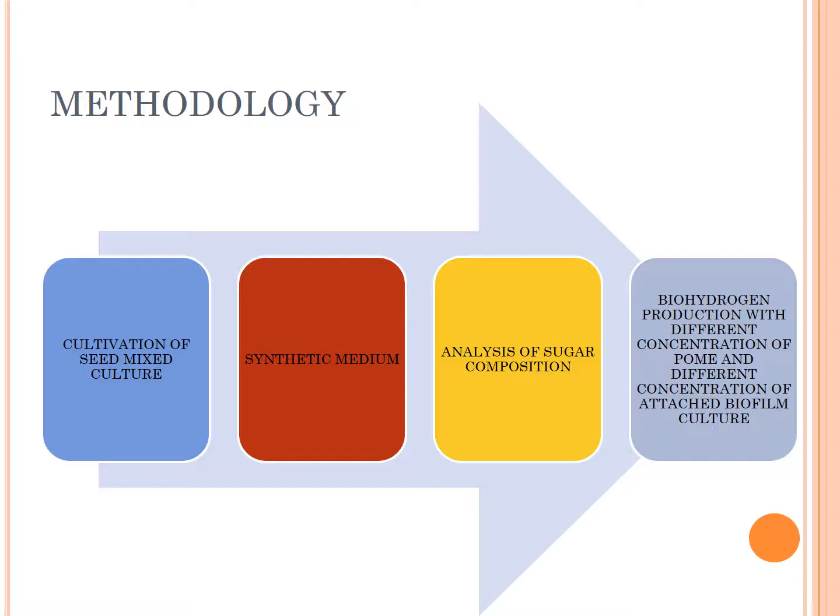The seed mixed culture will be collected from the palm oil mill. The microbial sludge will undergo heat treatment at 80°C for 60 minutes to inactivate methanogenic population before being used as inoculum in the fermentation. The 10% sludge was cultivated in 200 ml synthetic medium inside a 250 ml modified Scott Duran bottle, with nitrogen gas flushing at a flow rate of 1 liter per hour. The fermentation mixture was adjusted to pH 6 and kept at 60°C in a water bath for 48 hours.